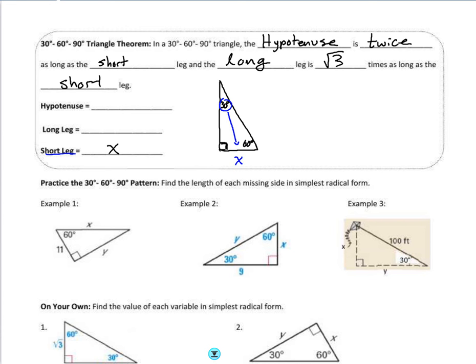That would make the 60-degree angle opposite of the long leg, which we know as x times the square root of three. And then we also know the hypotenuse is twice the length of my short side.